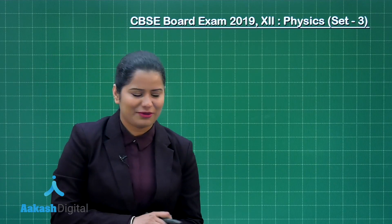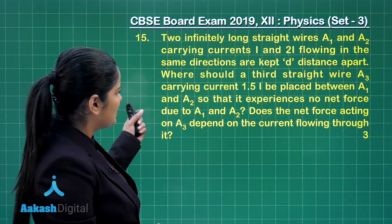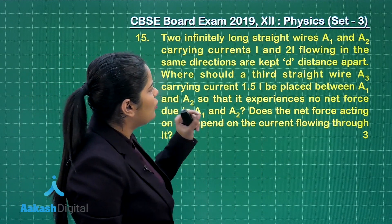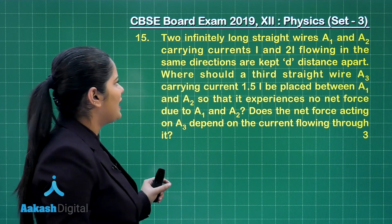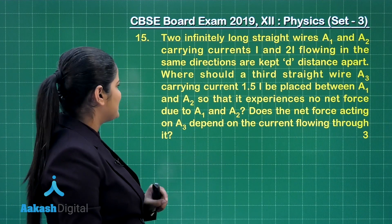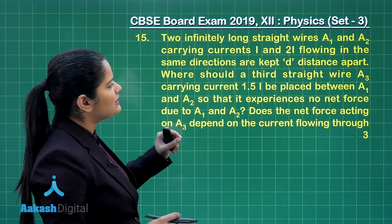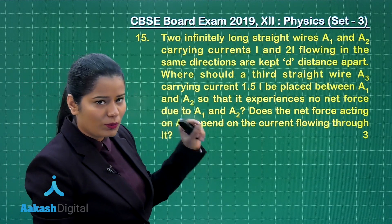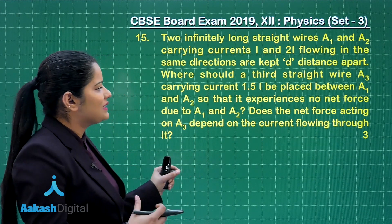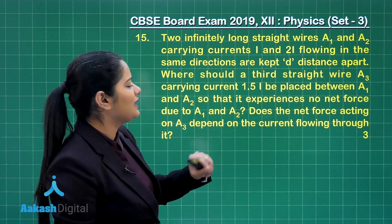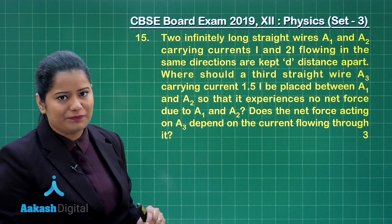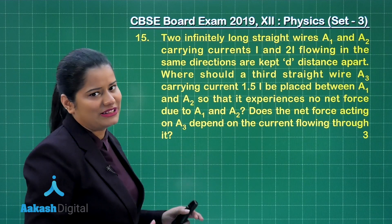Let us have a look at question number 15, which is again for 3 marks. This says two infinitely long straight wires A1 and A2 carrying currents I and 2I flowing in the same direction are kept D distance apart. Where should a third straight wire A3 carrying current 1.5I be placed between A1 and A2 so that it experiences no net force due to A1 and A2? Does the net force acting on A3 depend on the current flowing through it? Let us try to find a solution.